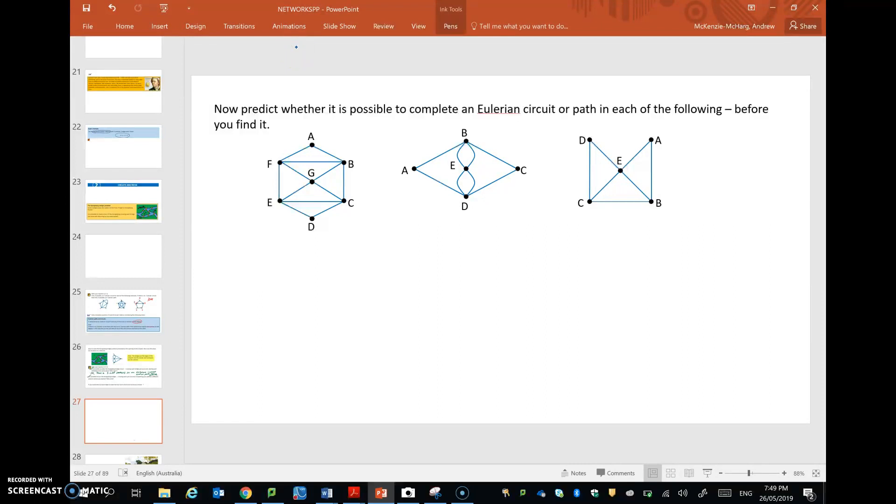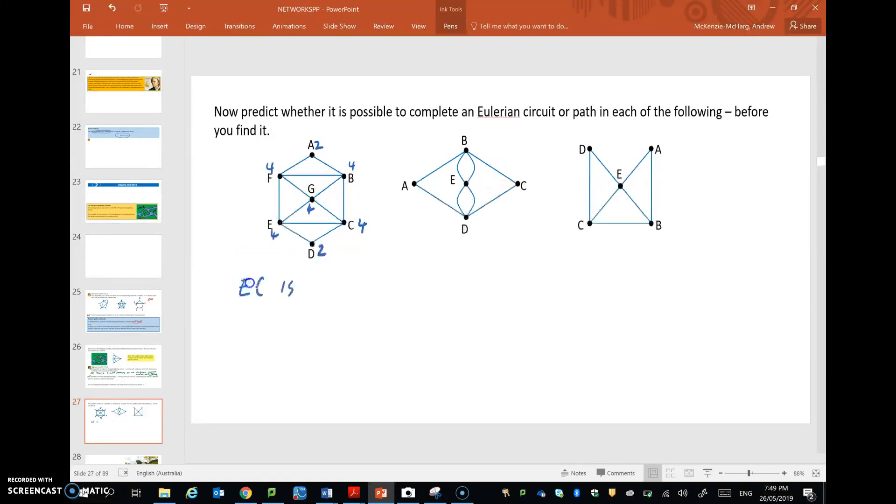Okay, so let's see. Have we got any odd vertices in this network? Okay, two for A. That's how many lead to it. Four for B. Four for C. Two for D. Four and four there. They're all even, aren't they? So an Eulerian circuit, EC, is possible.